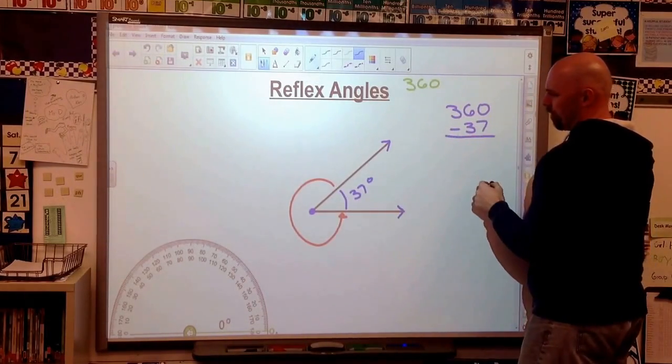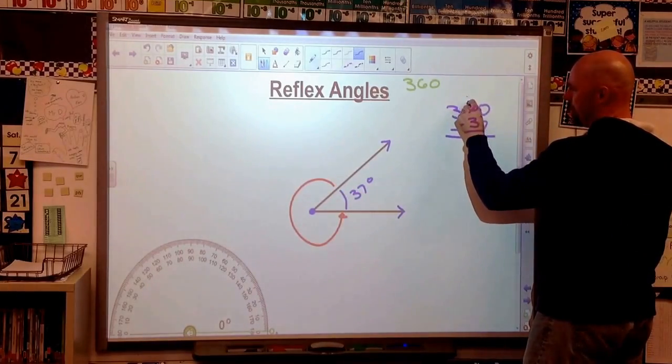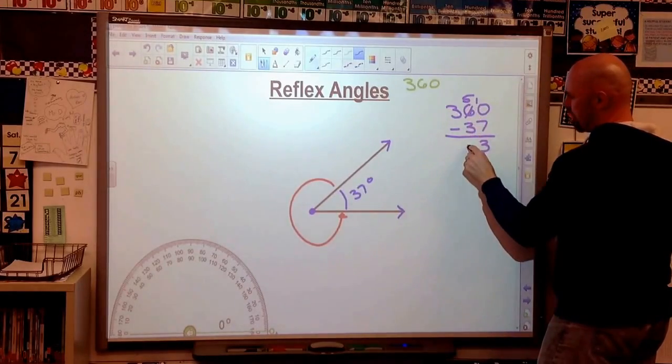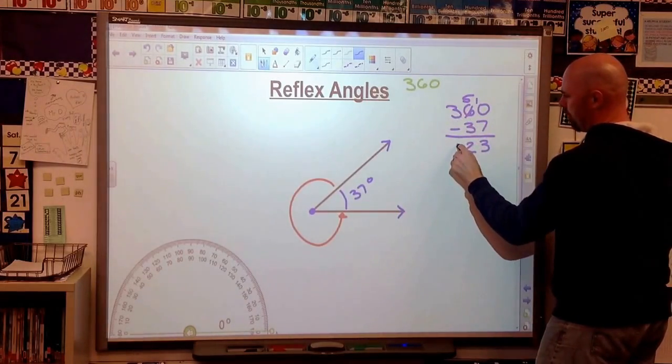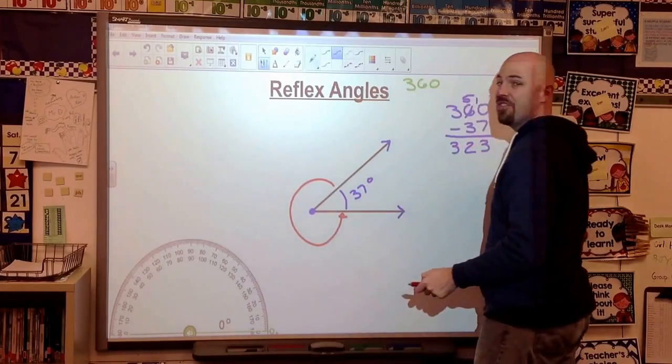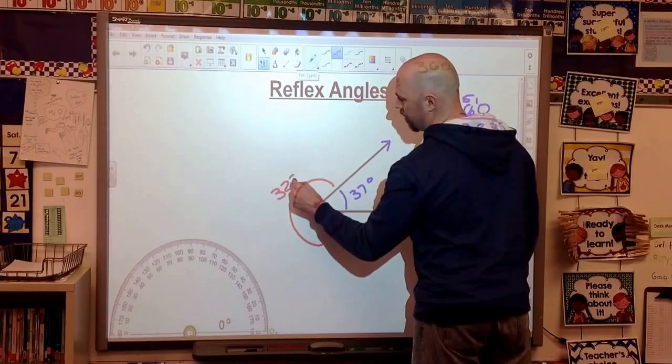So I'm going to do 360 degrees minus 37. And if I do this correctly, that should tell me this other piece here. So let's see. We're going to need to borrow. 5 minus 3 is 2. Bring down my 3. So this red angle, this red reflex angle, should be a 323 degree angle.